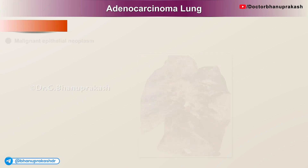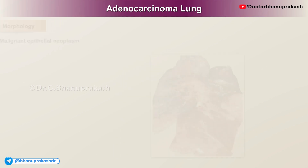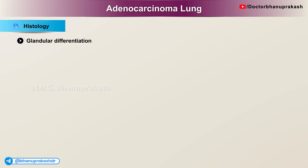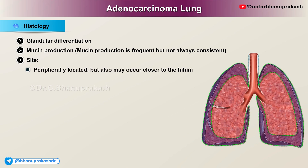Morphology: Adenocarcinoma of the lung is a malignant epithelial neoplasm with histologic glandular differentiation and/or mucin production. Mucin production is frequent but not always consistent. Adenocarcinomas are usually peripherally located but may also occur closer to the hilum.